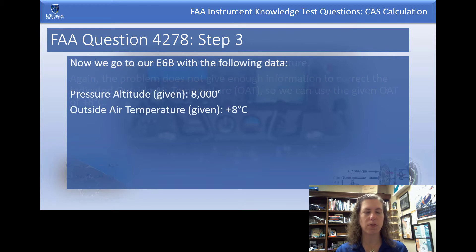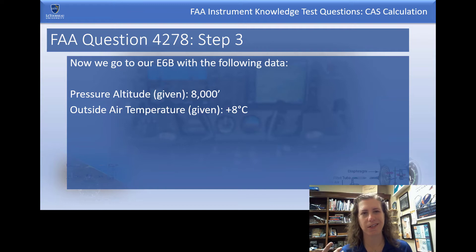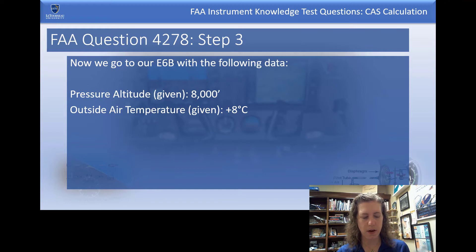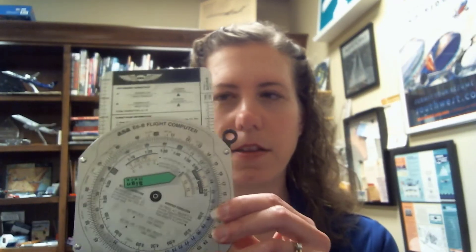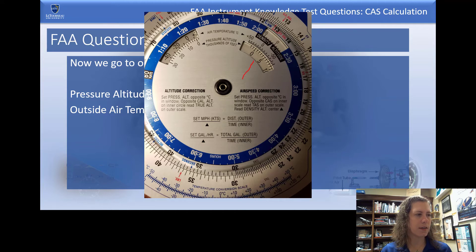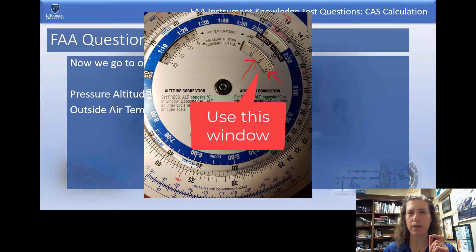Now we can use our E6B with this information. We have a pressure altitude, although it wasn't explicitly stated, and an outside air temperature from the question. The main thing that first confused me was figuring out which window on the E6B matters. On this computer, there is a label that says 'airspeed correction,' and the window we want is the one adjacent to that.